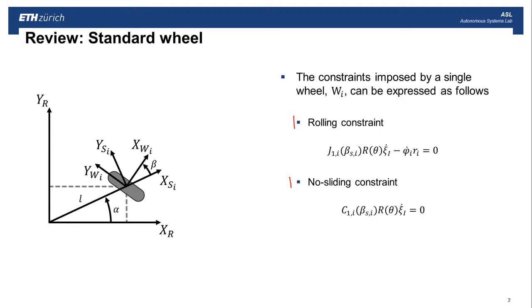And we said that for specific wheels, we would call these component matrices J1 and C1. Both of these are a function of beta. Beta, in this case, is the steering angle of the wheel. So if you have a steerable wheel, beta can change.